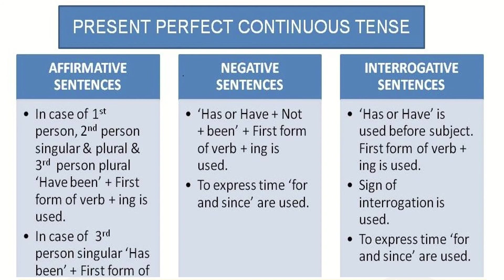When it is a negative sentence, we have to use 'has' or 'have' plus 'not' plus 'been' plus the first form of the verb plus '-ing'. And to express time, 'for' and 'since' are also used. Interrogative sentences use 'has' or 'have' before the subject, then we add the first form of the verb and then '-ing', followed by a question mark. 'For' and 'since' are also used to express the time.